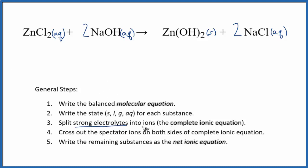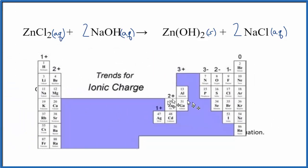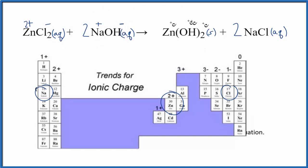Now we're going to split the strong electrolytes into their ions. This will give us the complete ionic equation. For ZnCl2, we know it's a strong electrolyte — it has aqueous after it, so we need to know the charges. Zinc is always 2+, so we put a 2+ for zinc as its ionic charge. Chlorine has a 1−. Sodium is group 1, so it's 1+. You'll have to look hydroxide up on a table of common ions, but since sodium is positive, OH must be negative — OH−. On the product side, we don't split the zinc hydroxide because it's a solid; it's not split apart in the test tube.